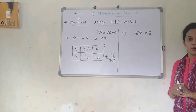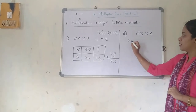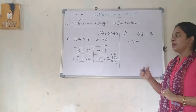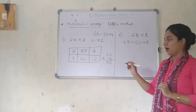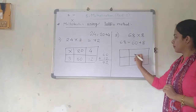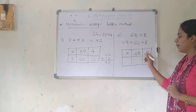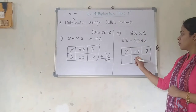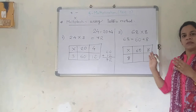Just now see the board for the next question. 68 into 8 — how are you going to write 68 first? In expanded form, how can I write it? Yes: 60 plus 8. Now I am going to form this model. 60 and 8 are there, so here 60 will come and here 8 will come. And by which number am I multiplying 68? Yes, I am multiplying by 8. So I am going to write 8 over here. Just see how I am going to solve this — by the same method.